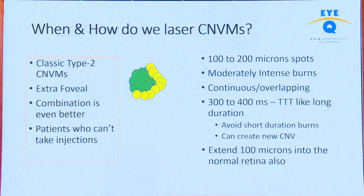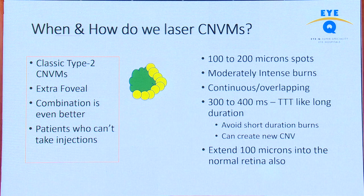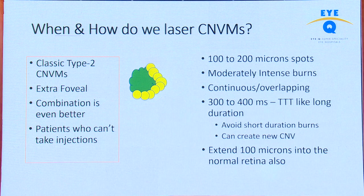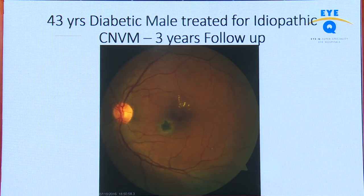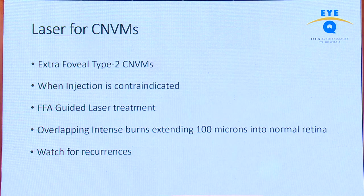Laser works well for classical or type 2 CNVMs, especially extra-foveal. Even in the current era, we combine laser with anti-VEGF for better long-term effect. For patients who cannot take intravitreal injections — for example in pregnancy — with an extra-foveal CNVM, this is where you need to know how to laser. Use 100-micron spots, rarely 200 microns. From the TTT era, when lasering the macular area for CNVMs, use long duration and low power spots to avoid creating new CNVMs. Extend 100 microns into normal retina.